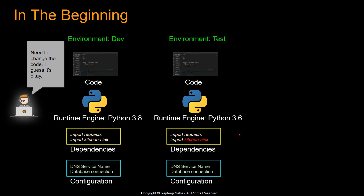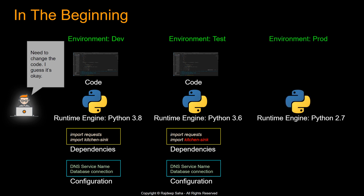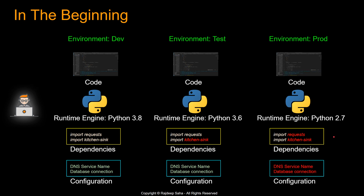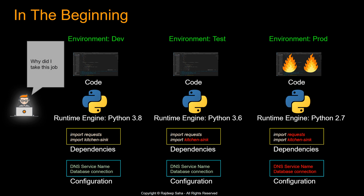Then one fine day, your code gets moved into prod. Production runtime engines are generally always behind. In prod, your company is running Python 2.7. Both of your dependencies break, the configuration file breaks, and basically your code is crashing and burning. So you are thinking, why did I take this job?